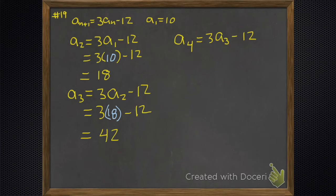So we go find a_4. That's three times a_3 minus 12. a_3 was 42. Big numbers. That's the stuff they don't like. Our fourth term is 114.